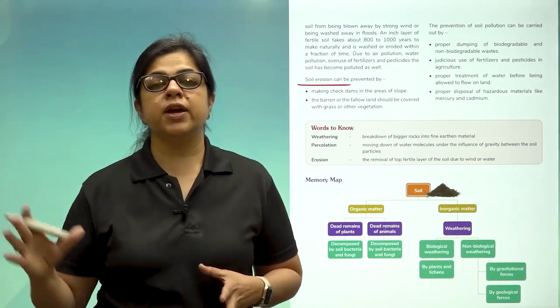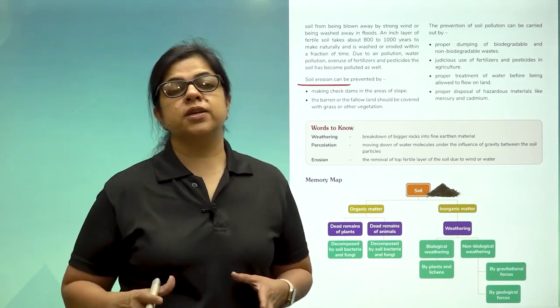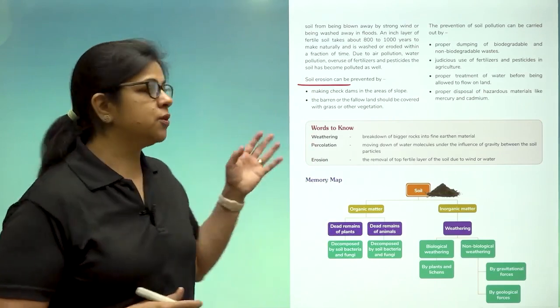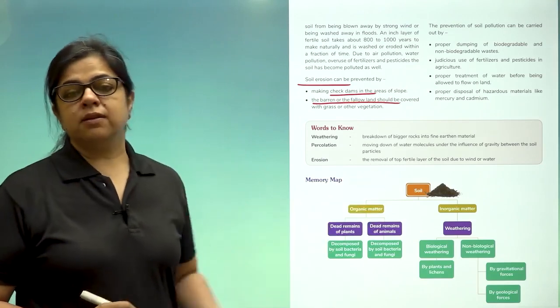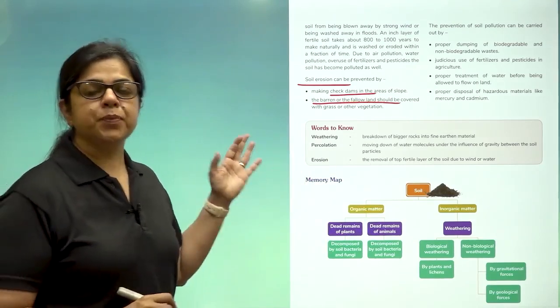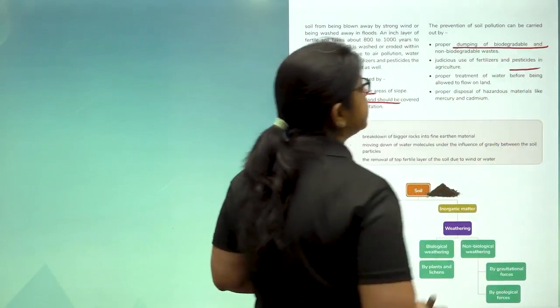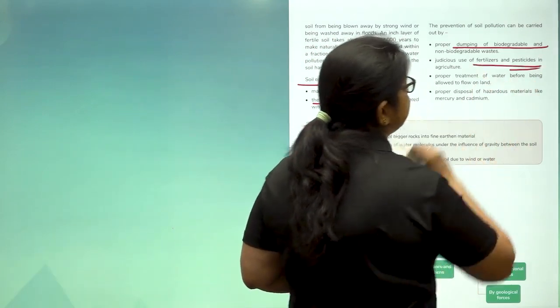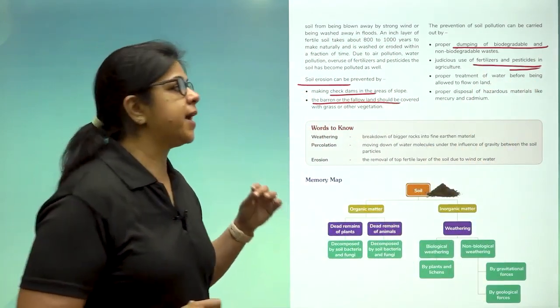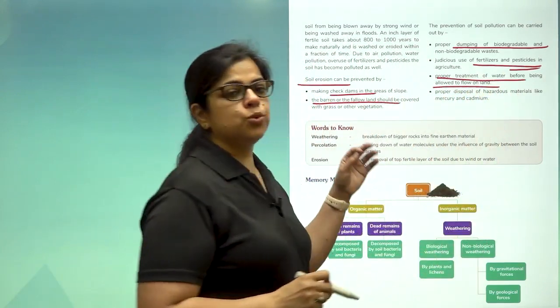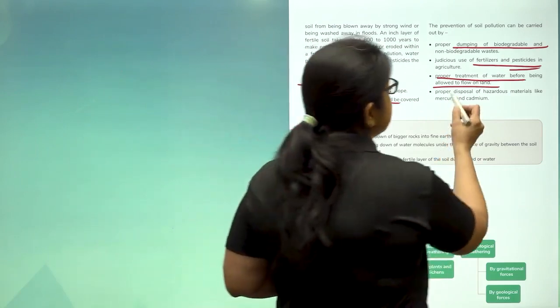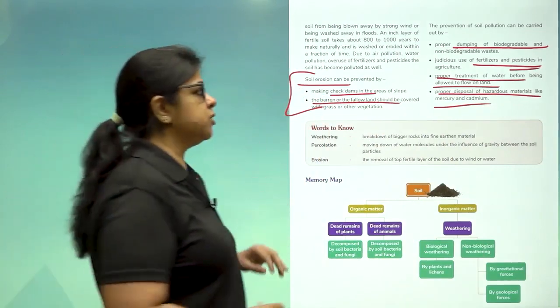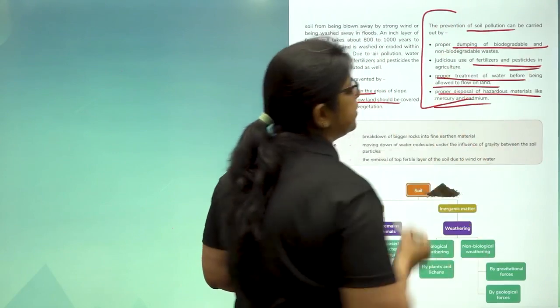So we just mentioned the blowing away of soil by wind and the washing away of soil by rain. What is this? This is soil erosion. How do you prevent soil erosion? You make check dams. You cover the barren sand or the barren land area with vegetation. There has to be a proper dumping of biodegradable and non-biodegradable waste so that there is no land pollution. Adding fertilizers and pesticides only in the right amount. Treatment of water before it is allowed to flow into the land areas and proper disposal of chemical waste. So these are the methods of preventing soil erosion and these are the methods of preventing soil pollution.